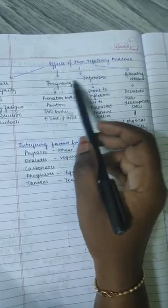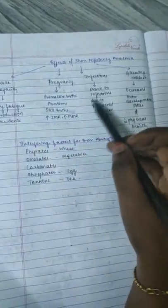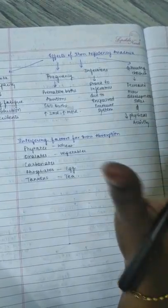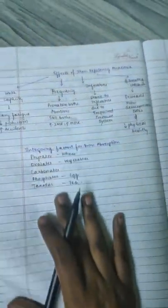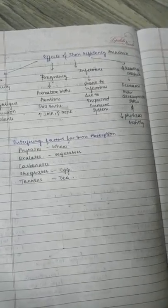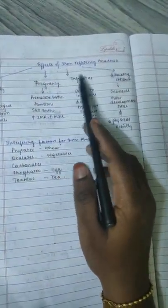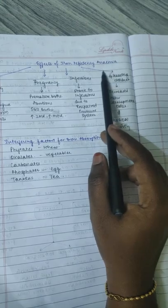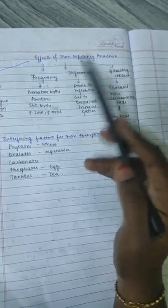In cases of infections, patients are prone to get more infections due to impaired immune system. As I have already said, iron is an important component of the immune system. When the immune system is impaired, they are prone to severe infections.